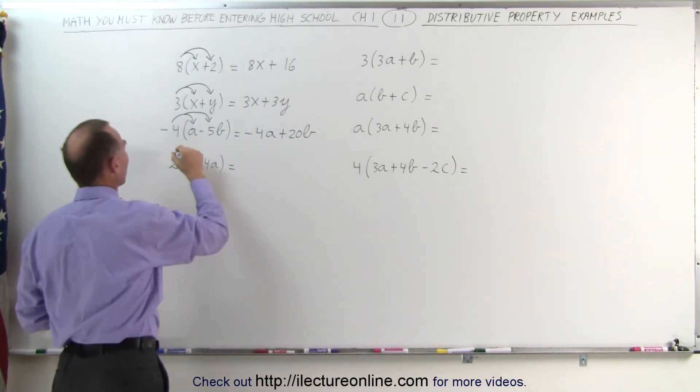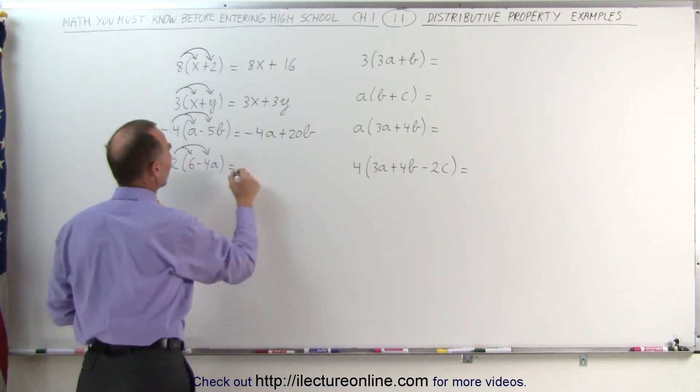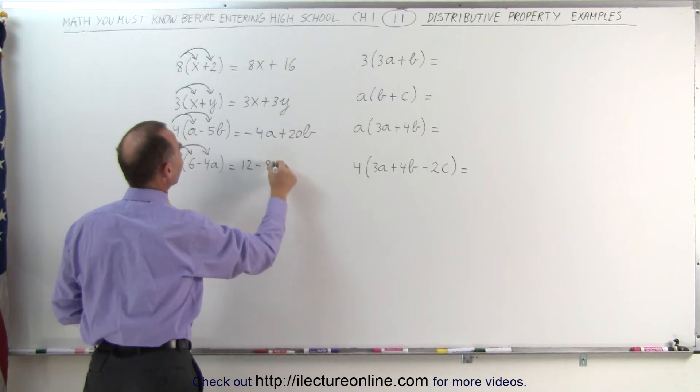Here we're going to multiply the 2 times 6, and the 2 times the negative 4a. 2 times 6 is 12. 2 times the negative 4a is negative 8a.